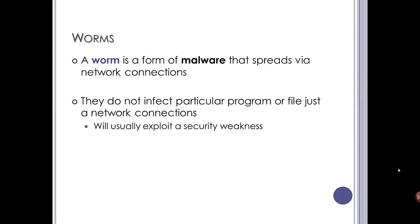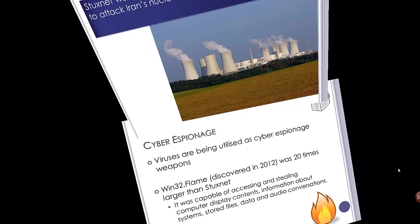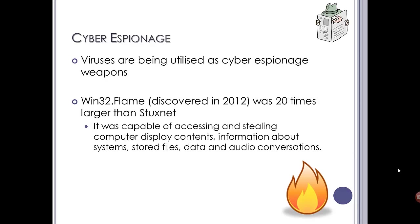A worm is another form of malware that spreads via network connections. Worms usually don't affect particular programs or files — they just need a network connection and typically exploit a security weakness to spread themselves. Stuxnet, for example, is a worm allegedly created to attack Iran's nuclear reactors. Viruses are increasingly being utilized as cyber espionage and cyber warfare. Win32.Flame, discovered in 2012, was 20 times larger than Stuxnet and was allegedly capable of accessing and stealing computer display contents, general system information, stored files, and even audio conversations.